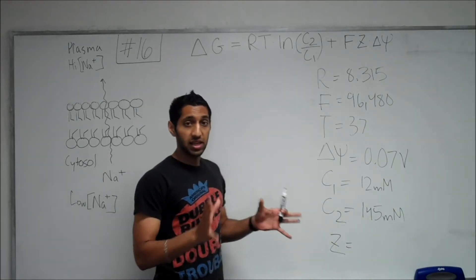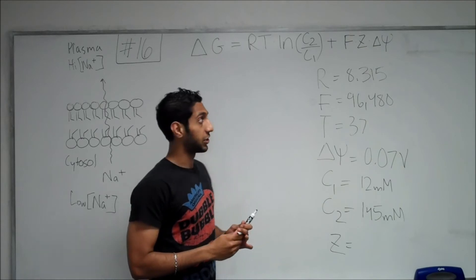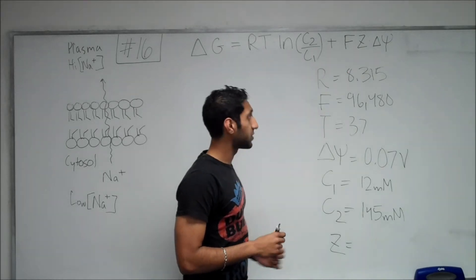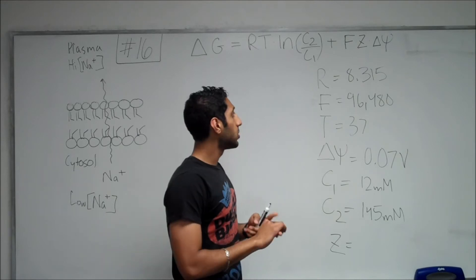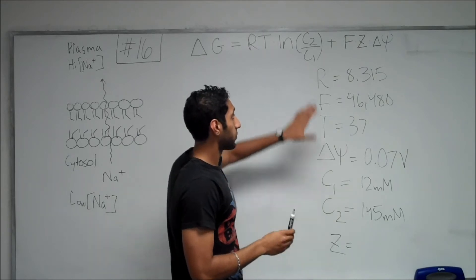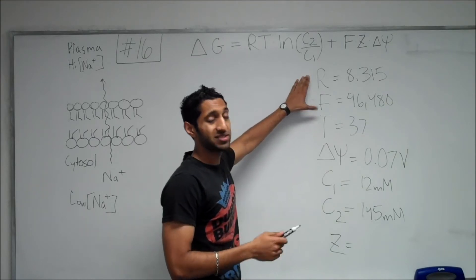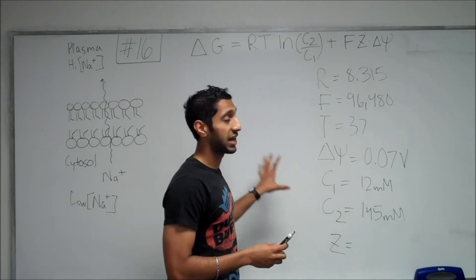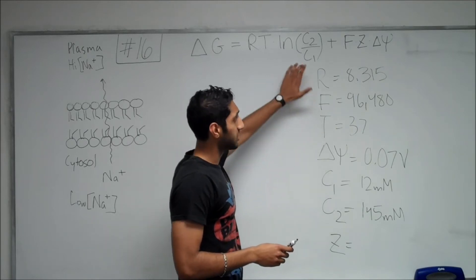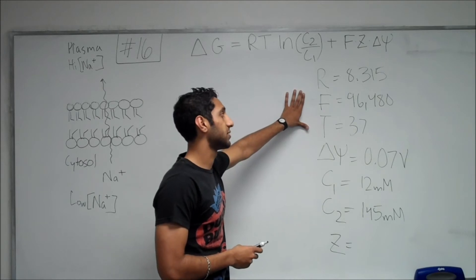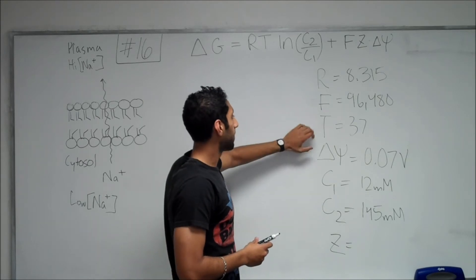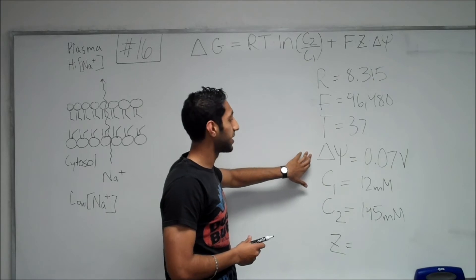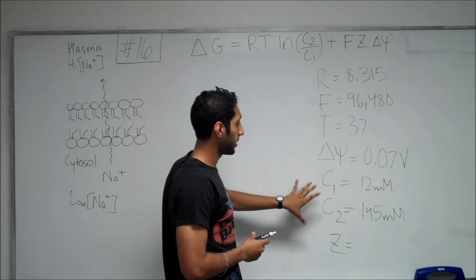So, in addition to that, we were also given a variety of different values for different variables. As far as the equation is concerned, we have most of the values. It either requires conversion or it's already given. So, for example, R and F are given values that are constants that never change. You would likely be given these values on the exam should you have to calculate these sorts of problems. R is equal to 8.315. F is 96,480. And we were also given a temperature of 37 degrees Celsius, a membrane potential delta psi of negative 0.07 volts and concentrations.